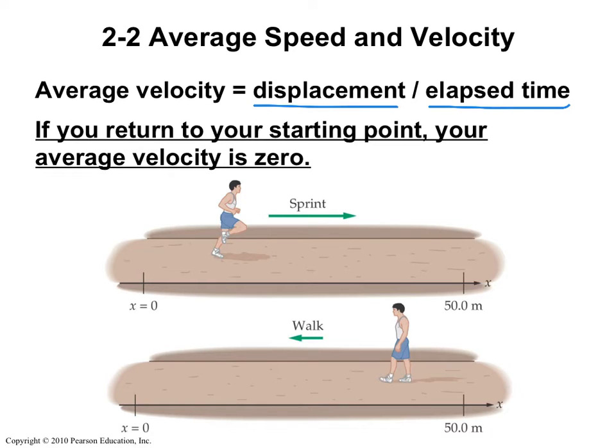As a reminder, if you return to the starting point, your average velocity is zero. So let's say that I start here, and I'm the sprinter, I sprint all the way to 50 meters, and then I walk back. My start and my end are at the same place.